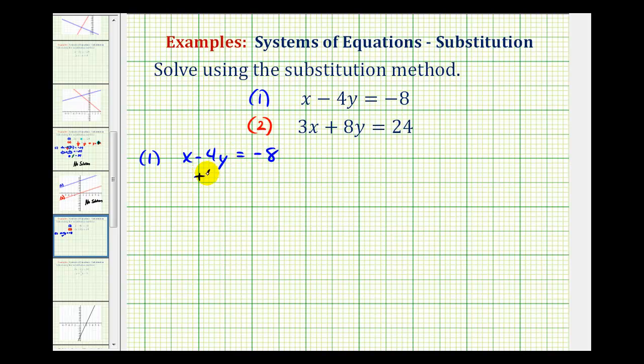So here we'll add four y to both sides of the equation. This would be zero, so now we have x equals four y minus eight.